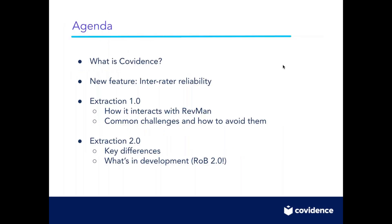Our agenda for today: first I'll talk a little bit about what Covidence is and go over the main features of the tool — what you can and can't do and where it fits into the process of a systematic review. Then we're going to go over a relatively new feature of inter-rater reliability. We'll go through what you get if you export IRR statistics, and then go over how to do it in the tool with a live demo. We'll also go through extraction 1.0, which is the extraction you're probably most familiar with, how it interacts with RevMan, and common challenges and how to avoid them.